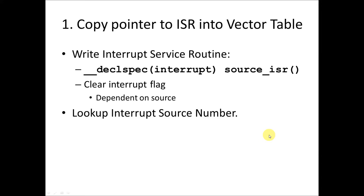The first thing we need to do, before we even copy the ISR into the vector table, is write an interrupt service routine. This is just a function with a special clause in front of it — it doesn't return anything. The name can be anything you want; usually we put 'ISR' in it to indicate it's an interrupt service routine. In front of it, we have to put 'decl spec' (declare special) with 'interrupt' in parentheses. This tells the compiler it's not a normal function — it's going to use a different return instruction. Instead of RTS (return to subroutine), it uses RTI (return from interrupt).